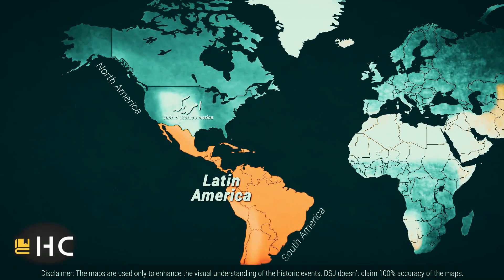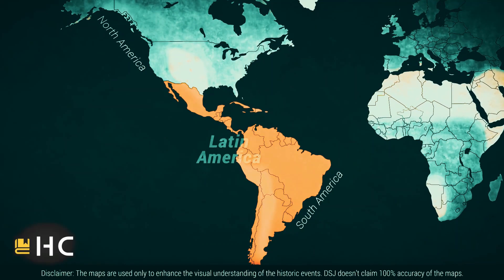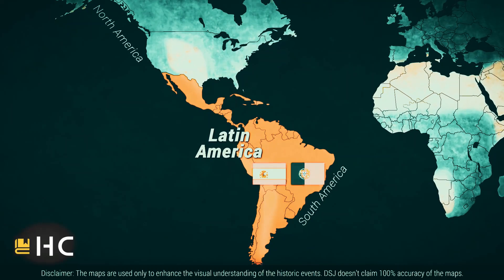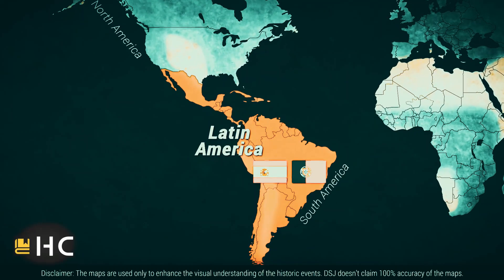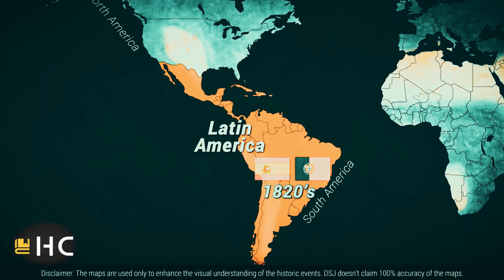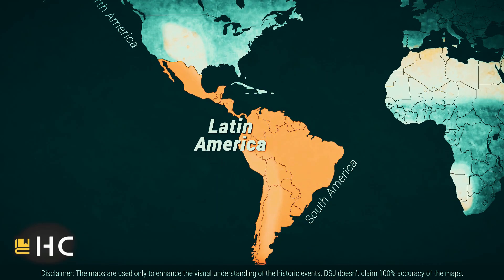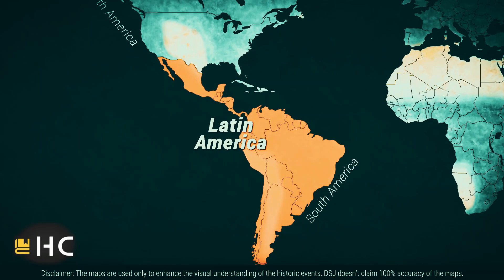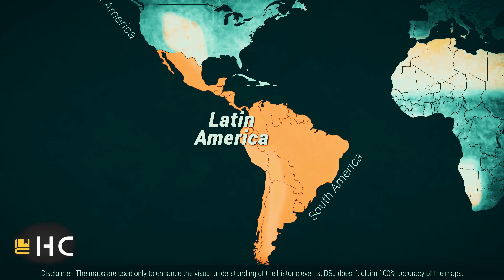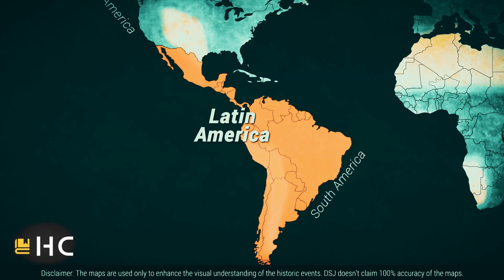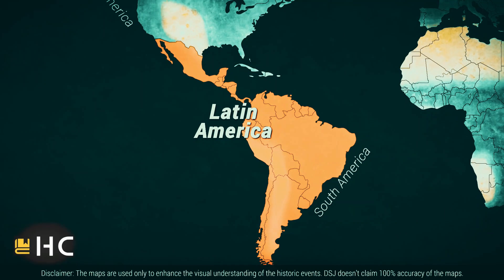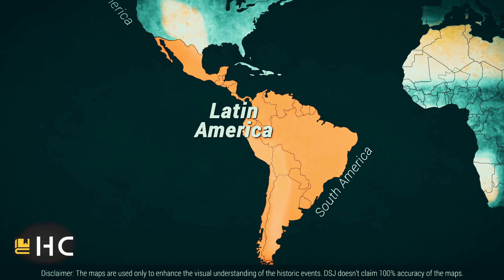It all began in the 1820s, affecting the entire region from Mexico to Argentina, known as Latin America. Spain and Portugal had been controlling this region, but in the 1820s these countries became independent. It was a great revolution — for the first time, the European powers had lost influence in the region. Still, there was a problem: the European powers could still reoccupy these countries because the newly independent countries were weak and not politically stable.